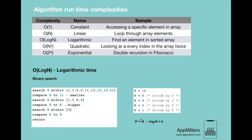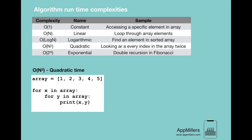The next complexity is quadratic time complexity, O(n²). It represents an algorithm whose performance is directly proportional to the square of the input data set size — like linear but with time increasing quadratically. This occurs whenever we nest multiple iterations. In the code example, the function searches through the array at least once, and for each iteration of the first loop we iterate over the same elements in the second loop, passing over the array twice and producing quadratic time complexity.